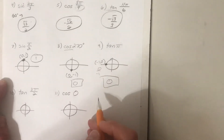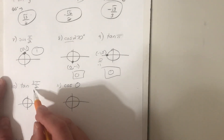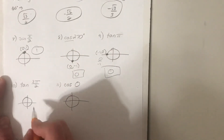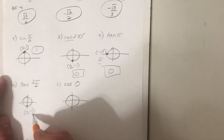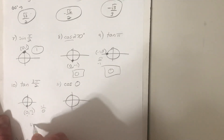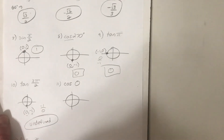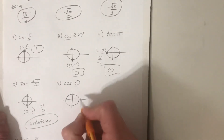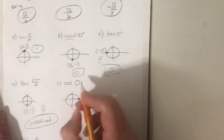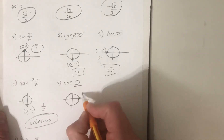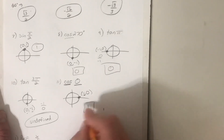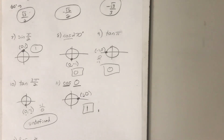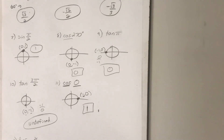For tangent of 3π/2 — same location as 270°, at the bottom of the unit circle, coordinates (0, -1) — tangent is y over x, which is -1 over 0, and that is undefined. For cosine of 0, we're on the right side of the unit circle with coordinates (1, 0); cosine uses the x-coordinate, so the answer is 1. Those are the standard unit circle problems — ideally you'll have the unit circle memorized and be able to do it without referring to it by the end of the year.